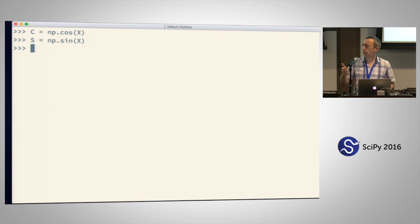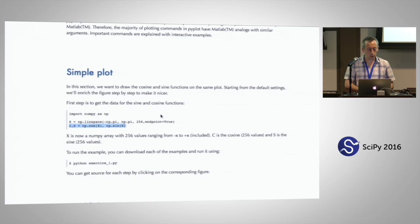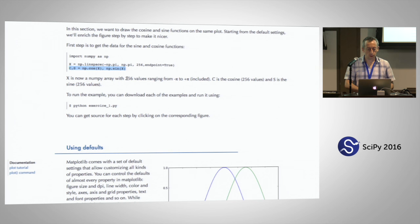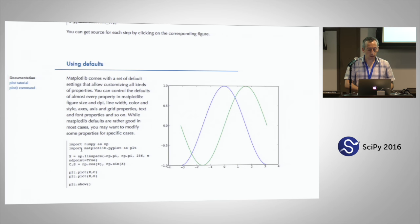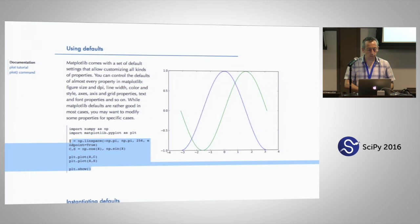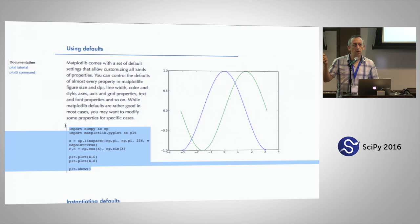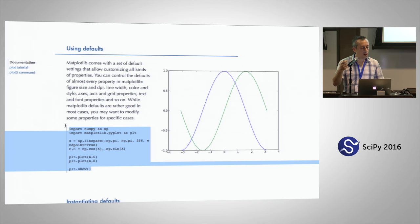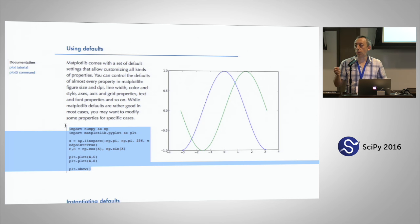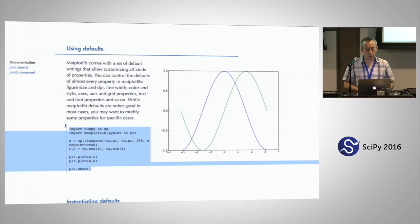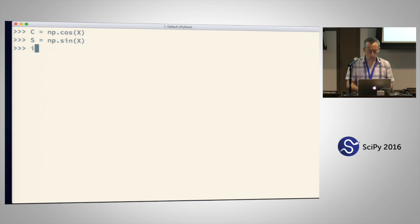So now we have x as the values on the x-axis, c for cosine, and s for sine. Next we import matplotlib.pyplot as plt — every plt command will be related to Matplotlib. Then we can plot x versus c and x versus s.